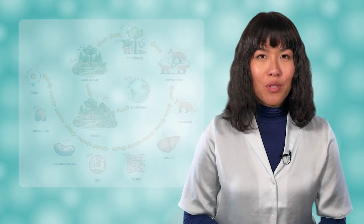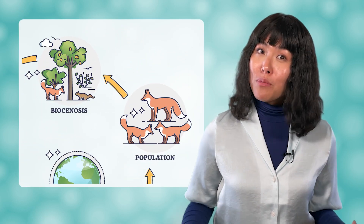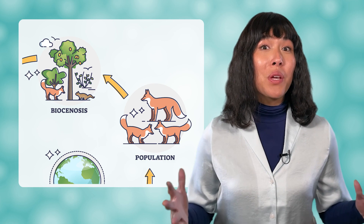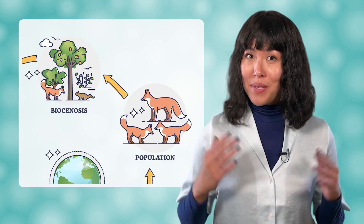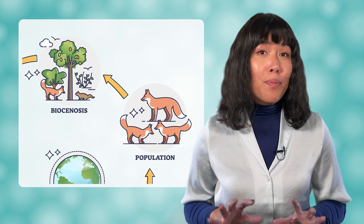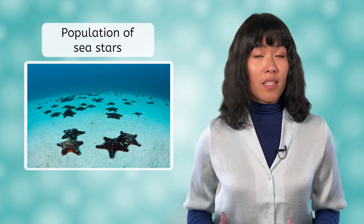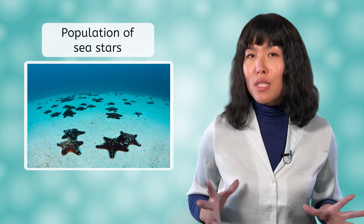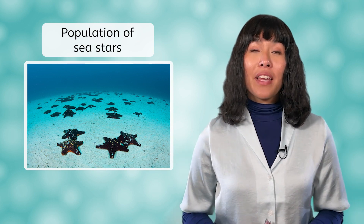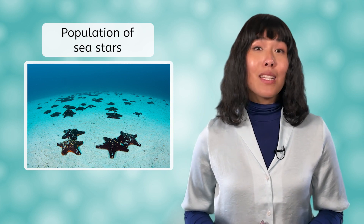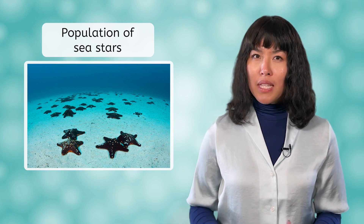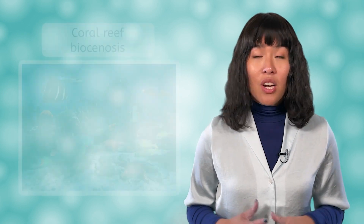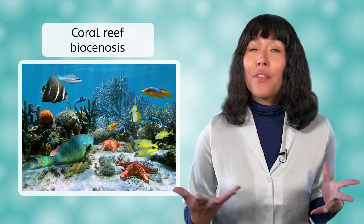The first level we'll look at today is called biocenosis, also sometimes called a biological community. On the diagram, we can see that it is one level above population. Remember that to be considered a population, a group of organisms must all be the same species and live in the same geographic area, like this population of sea stars. But most populations don't live in isolation — they share their physical space with many other species.